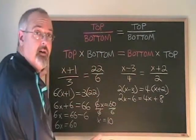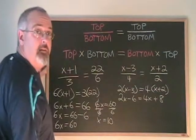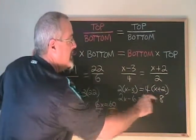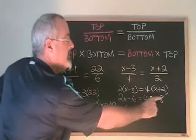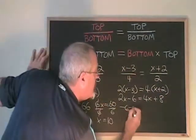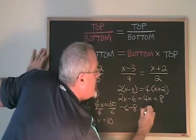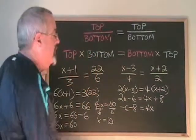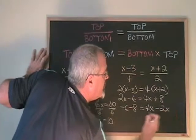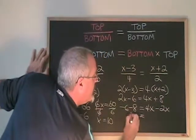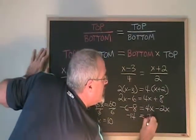Let's get all of the x's to the right side this time and all of the numbers to the left side. So I keep my negative 6 here. If I move the 2x to the right side it becomes minus 2x. This becomes negative 14 equals 2x.